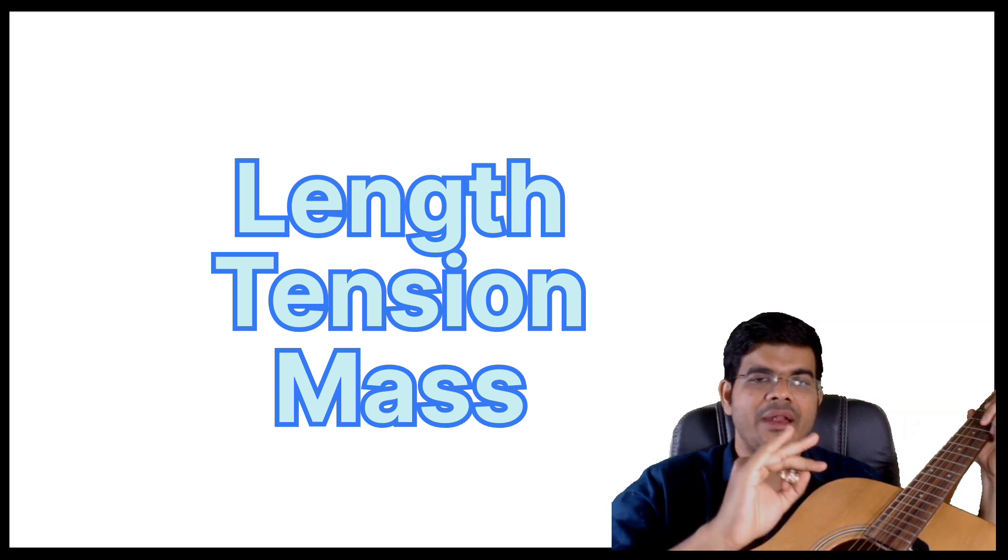The third thing to remember is tension. Tension can be increased with the screw on the guitar — when you rotate it, the tension increases, and when tension increases, the pitch also increases. So these are the three things that can be used to manipulate the pitch of the voice: length, tension, and mass of the vibrator, that is the vocal folds.